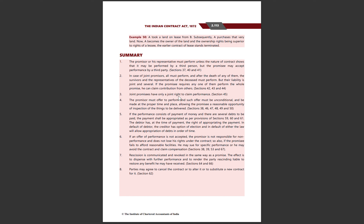Joint promisees have only a joint right to claim performance. The promisor must offer to perform and such offer must be unconditional. Jo promisor hai use hamesha offer to perform karna hai jo ki unconditional ho, proper time aur proper place par ho, aur is tarike se ki promisee ke paas ek reasonable opportunity ho inspection ki jab cheezein deliver hoti hai. As per Sections 38 to 50.